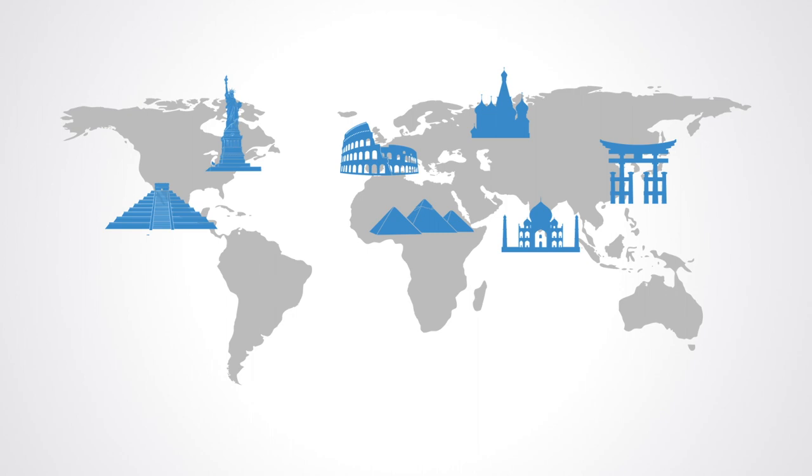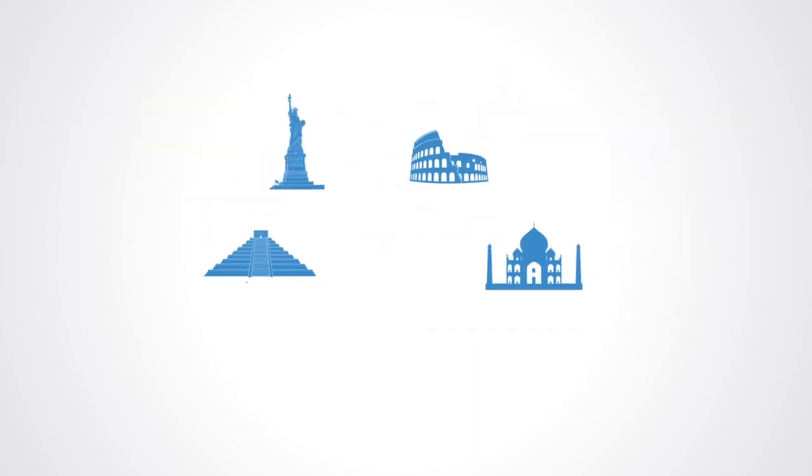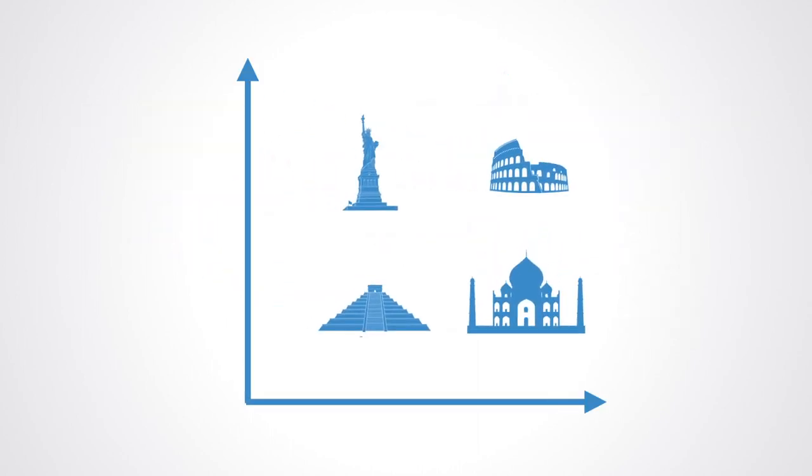The global cultural map shows where societies are located along two dimensions. Moving upward on this map reflects the shift from traditional values to secular rational, while moving rightward reflects the shift from survival values to self-expression values.